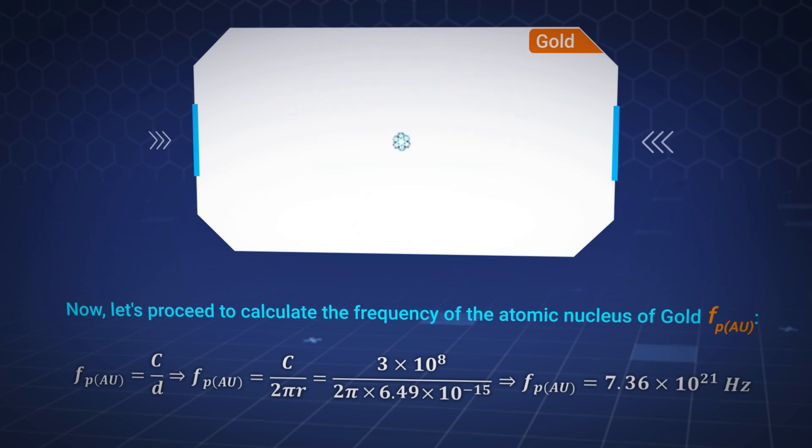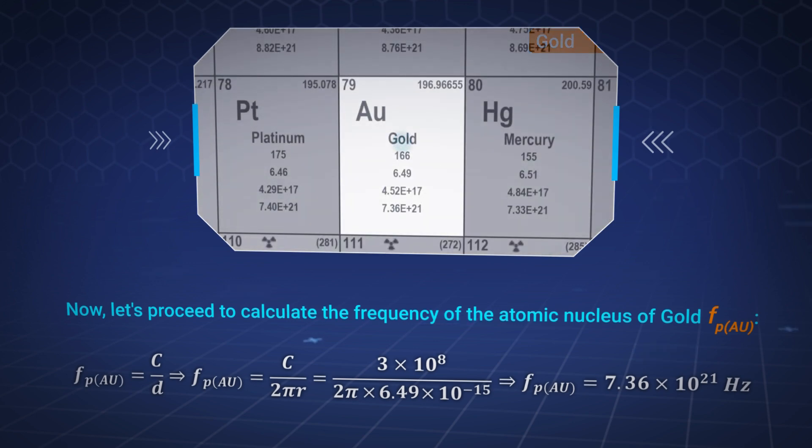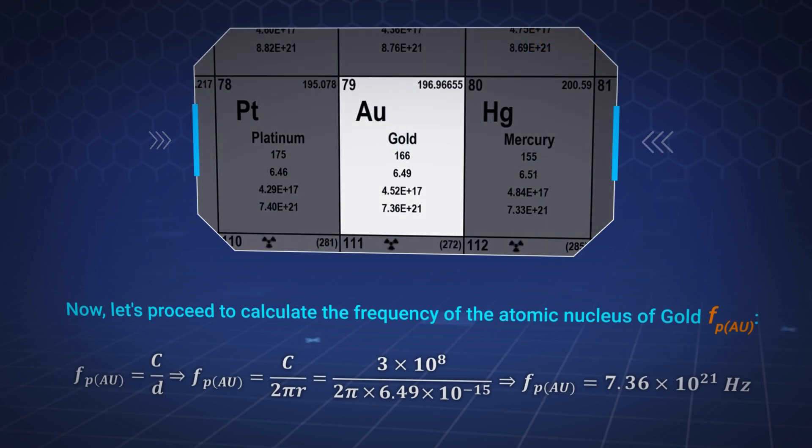Now let's proceed to calculate the frequency of the atomic nucleus of gold, f of p of aurum.